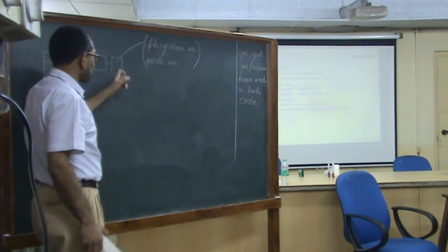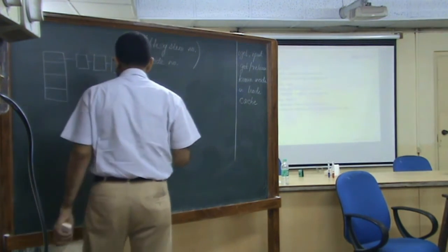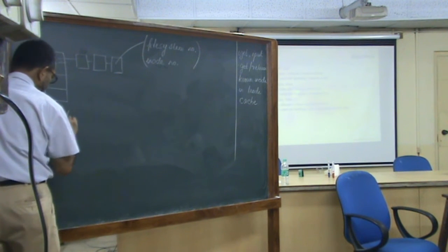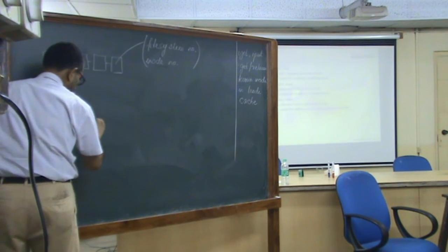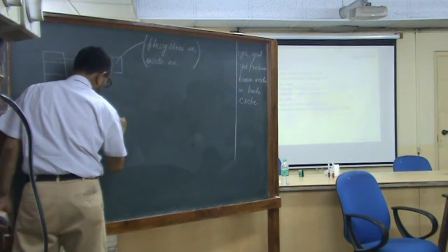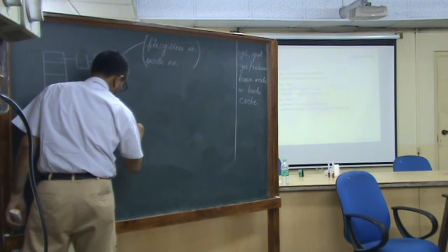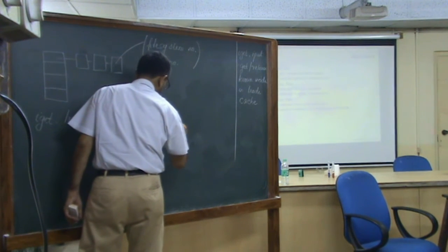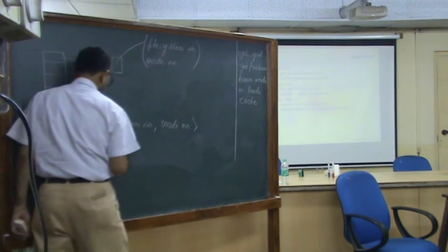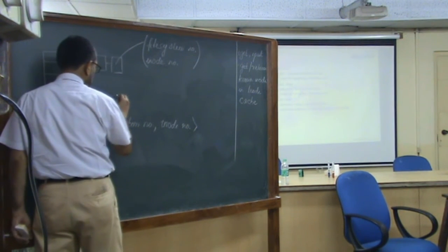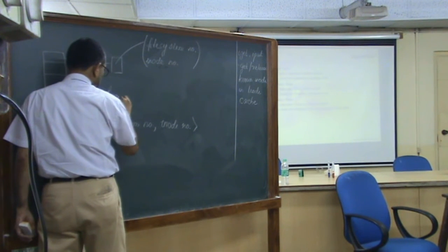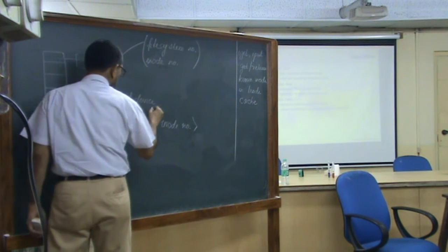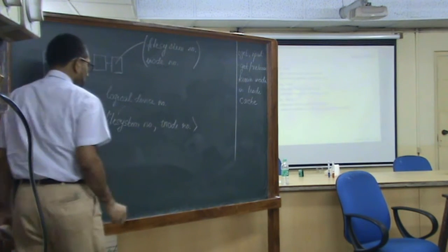Along with the inode number you also need a file system ID. This pair will uniquely identify an inode. This information is contained in the inode cache entry, and for i-get that pair is the input. This is also referred to as a logical device number — each file system has a logical device number, so you could call it file system ID or logical device number; it means the same thing.